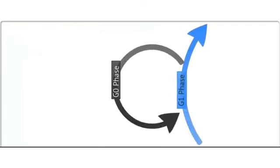Not every cell in your body is actively dividing at all times. Most cells are alive and performing activities essential to life, but are not actively preparing for the copying of their DNA or for cell division. They are in a stage known as the G0 phase. These cells may spend the rest of their life in G0 and never divide again, or cells in G0 may receive a signal that their division is needed and re-enter the cell cycle. It all depends on the type of cell it is and the signals it is receiving from the body.